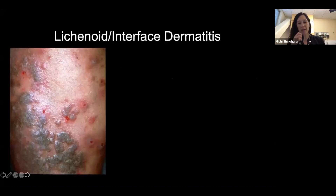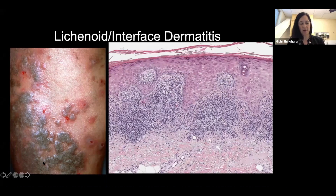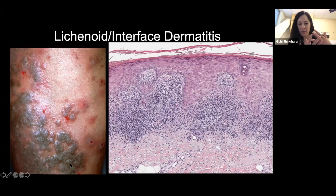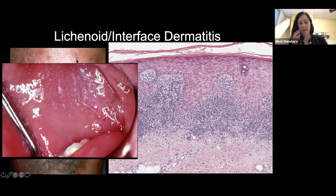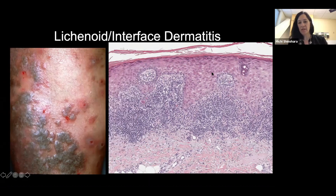Looking at some clinical images: lichen planus — you might remember from med school — has the Ps: purple, polygonal, pruritic papules and plaques. You can see in this image where that purple comes from — it's sort of a gunmetal gray, purple, violet color on most people. It's itchy, as you can tell — people are scratching. Up close we see Wickham striae, almost a hint of a white network on top of these lesions that's slightly lacy. We see it really well in the mouth — here's some Wickham striae on the inside of the buccal mucosa. What people think this correlates to — it's not totally clear — but probably either the shape of the rete ridges or this hypergranulosis.